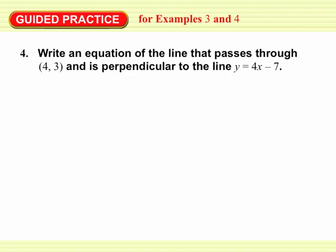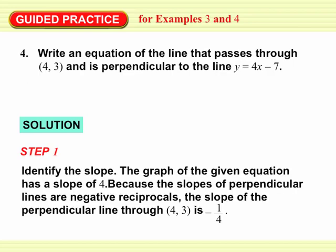Now you try: write an equation of a line that passes through the point 4 comma 3 and is perpendicular to the given line. Pause this presentation while you try it, then watch to see how you did. The slope of our new line is going to have the opposite sign — so instead of positive it'll be negative — and it's going to have the reciprocal, so instead of 4 it's going to be 1 fourth. So the slope of the new line is negative 1 fourth.